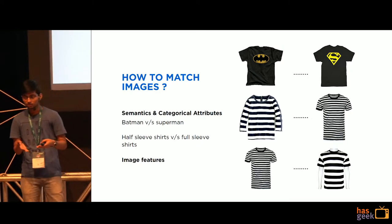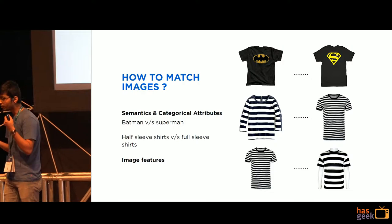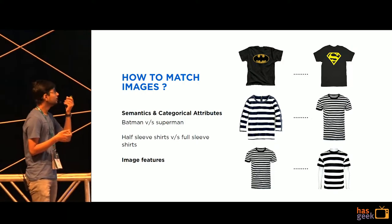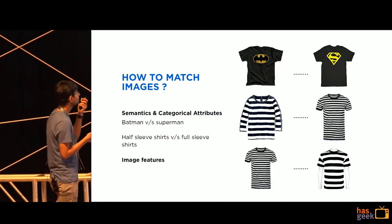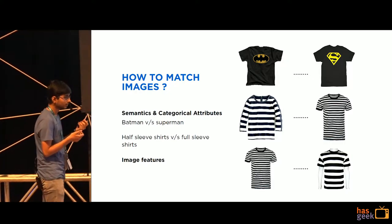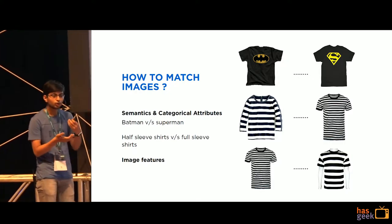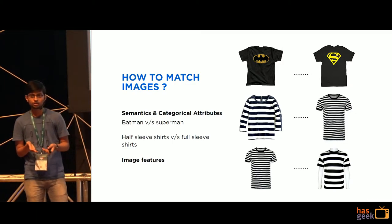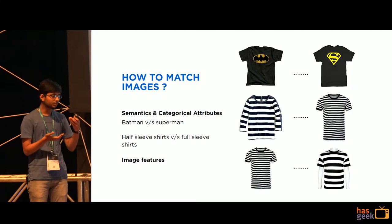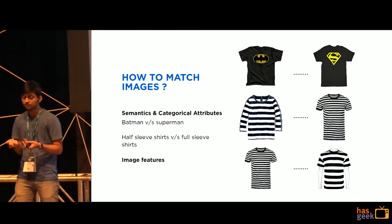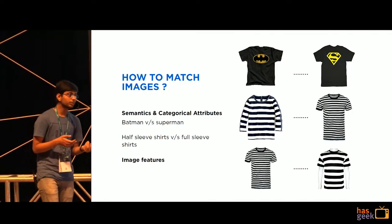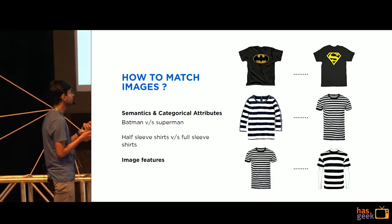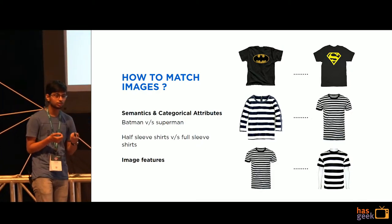Apart from that, there are fine-level and minute-grain features associated with an image which semantic and categorical attributes fail to capture. For example, how two striped shirts differ, what the differences between two graphic shirts are, or how two floral shirts differ from each other. With recent developments in deep learning, architectures are working well at capturing these fine-grained variations associated with an image.